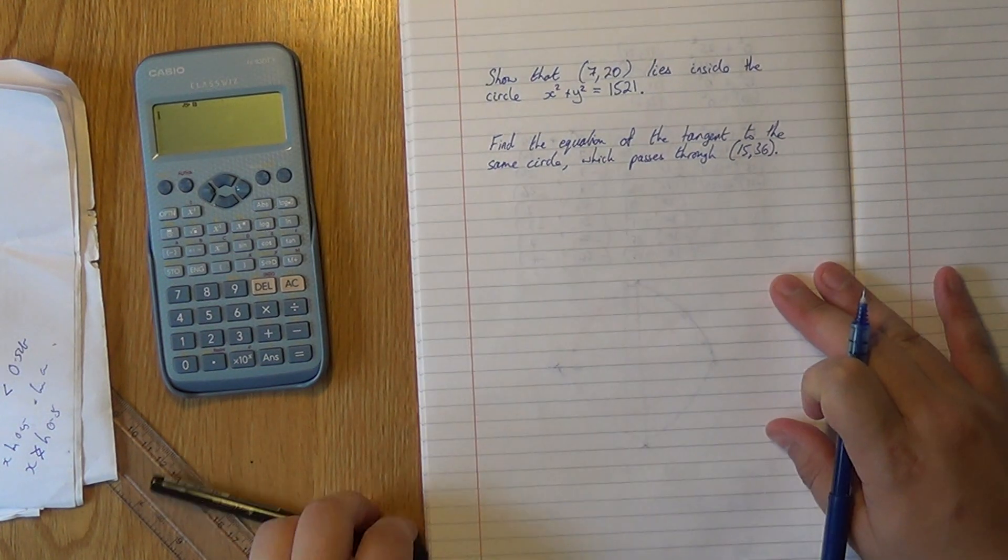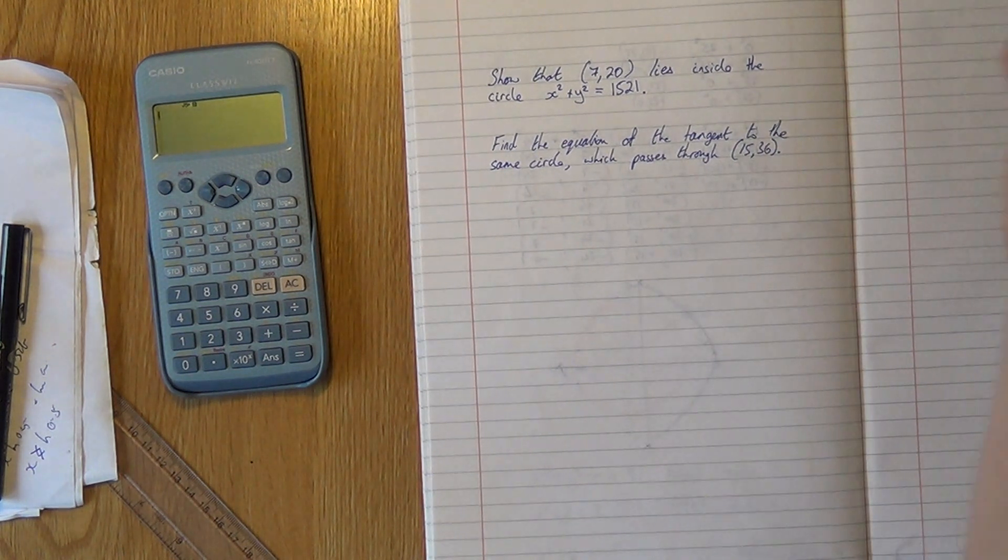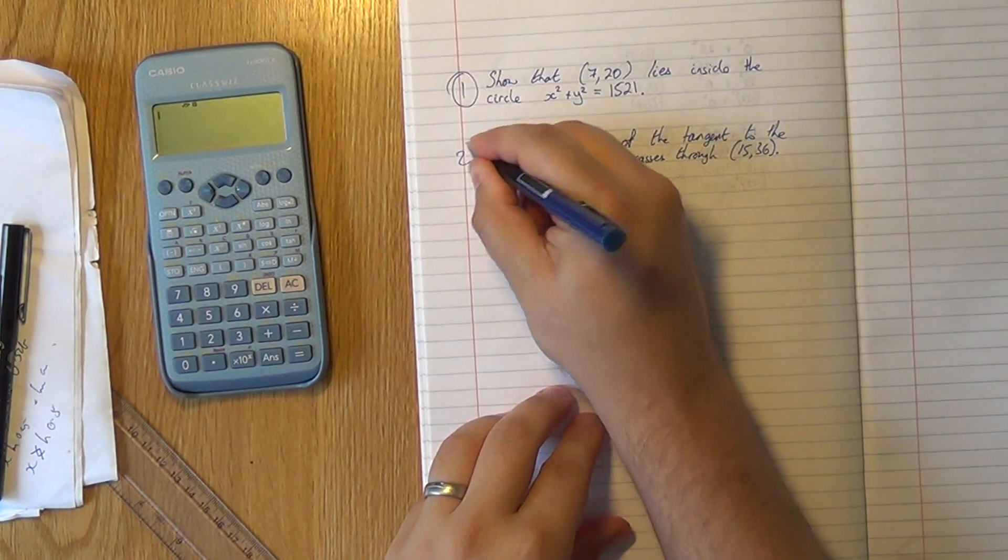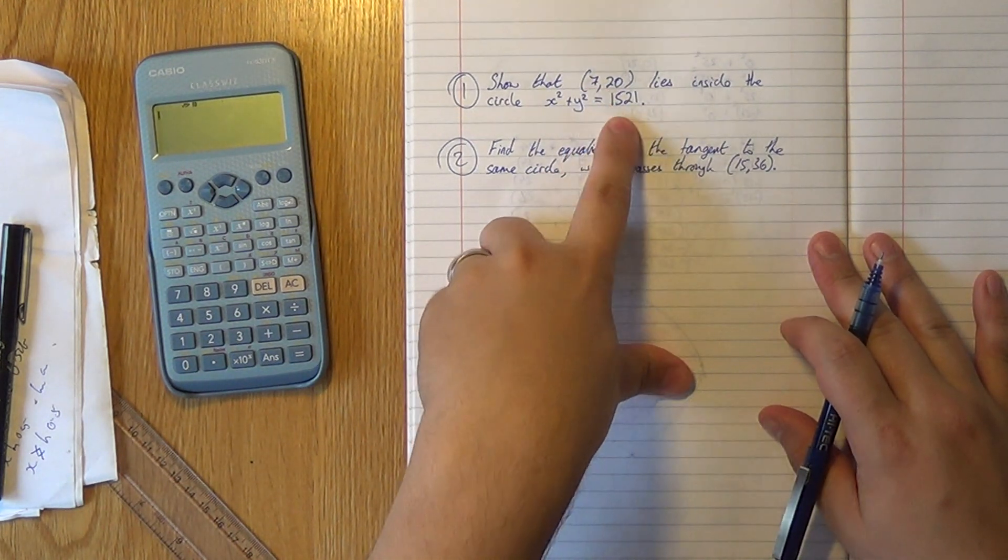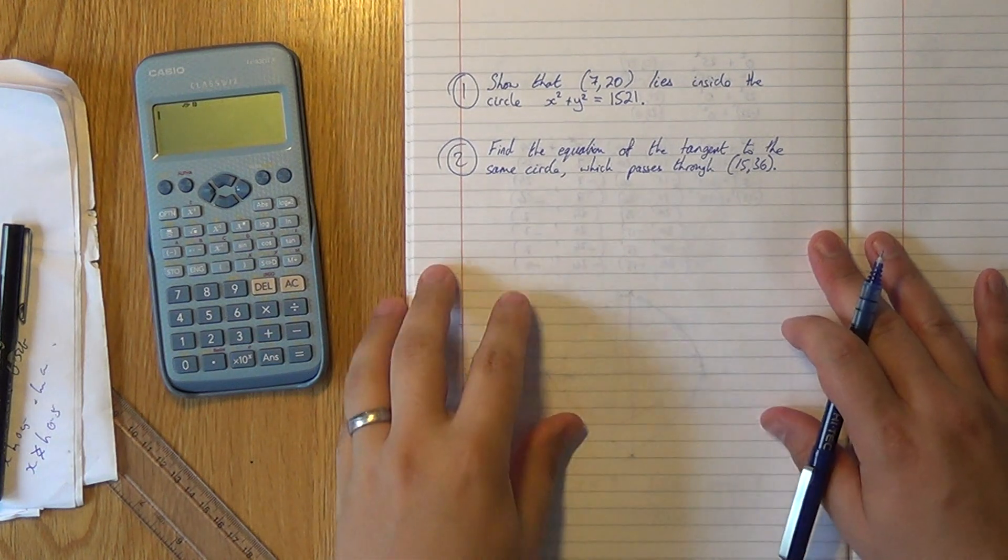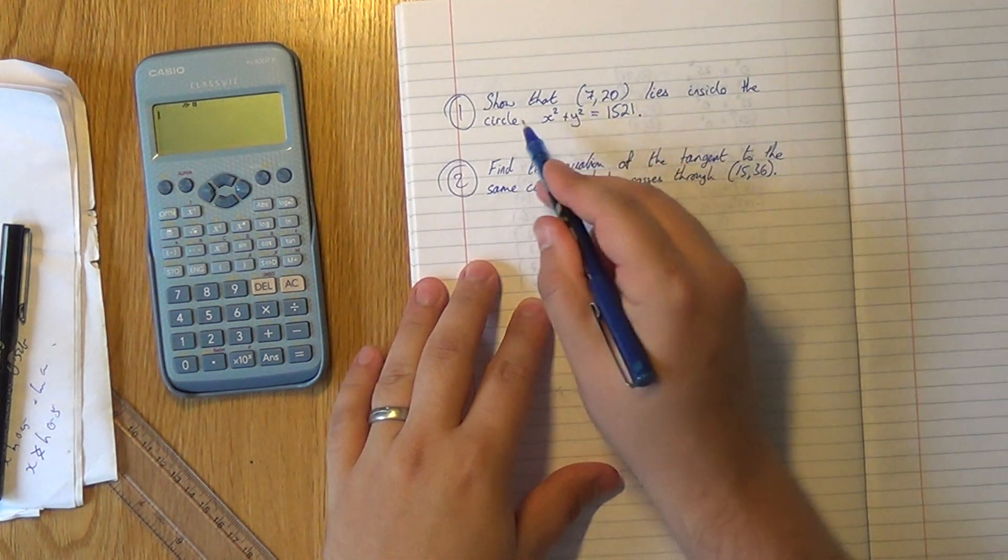Okay, we're going to look at solving a problem or two to do with circles and properties of them. So there's two problems here: problem one, problem two. Problem one is to show where this point resides compared to this circle. So the first thing to do would probably be to try and characterize this circle in some way.